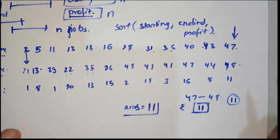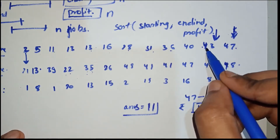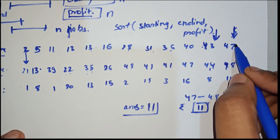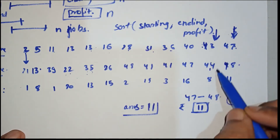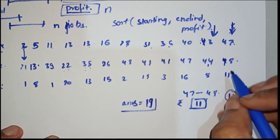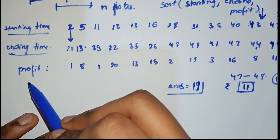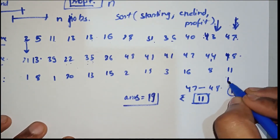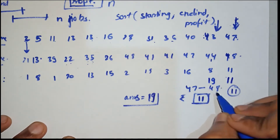Now let's go to this job from 43 to 44. We can do this and the previous job both, because this ends at 44 and the next starts at 47. So we can work from 43 to 48. That gives us 11 plus 8 equals 19. I'm creating another array to store these values — so we have 19 here.